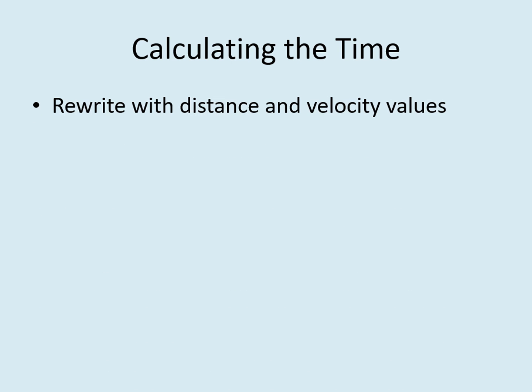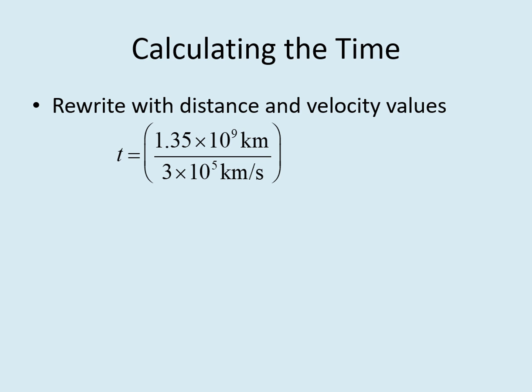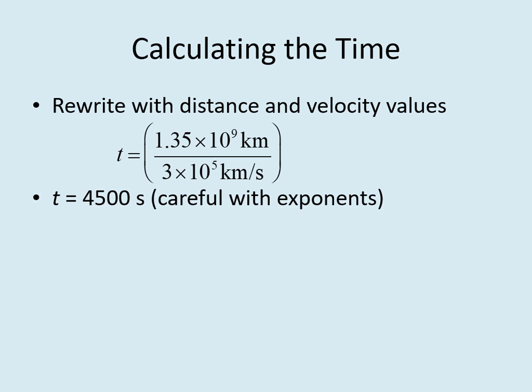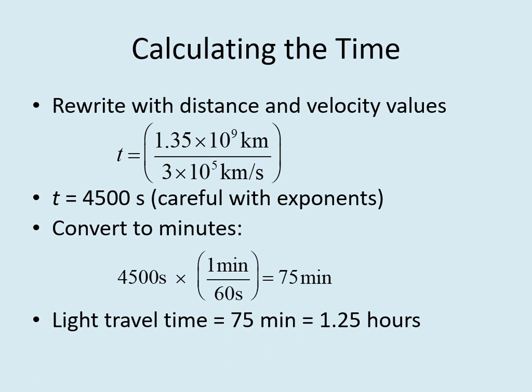Now we can actually calculate the time it takes for light to travel to the planet. The first step is to rewrite the equation, this time putting in the values for the distance and the velocity. Then we simply do what the equation tells us: divide the distance by the velocity and get the time in seconds. Remember to put exponents into your calculator correctly — use the EE or EXP key and don't put in extra 'times 10s.' In this case, the time came out to 4,500 seconds. If you got something like 4.5 times 10 to the 16th seconds, you're not entering the exponents correctly — try reviewing the online lecture on math. Since 4,500 seconds seems like a lot, let's convert that into a more reasonable value: 75 minutes, or an hour and a quarter.